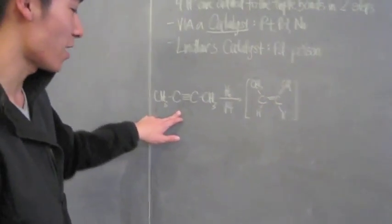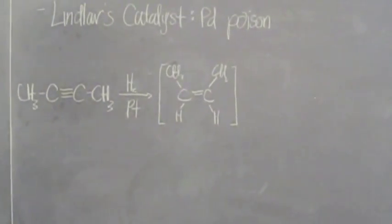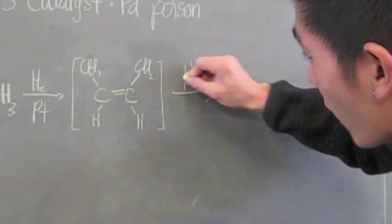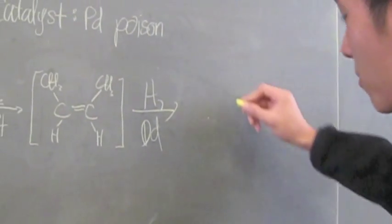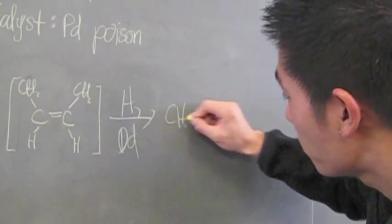So to start off with, we have something like 2-butyne, in which we're adding hydrogen and platinum across the triple bond to give us an intermediate alkene. From there, we do a second step, in which we add two more hydrogens and some other catalyst, such as palladium, to give us our butane.